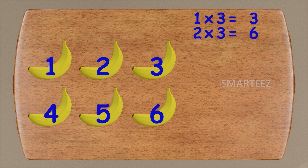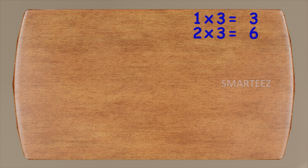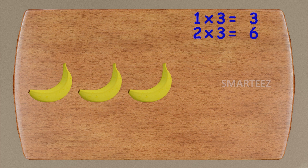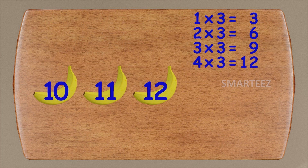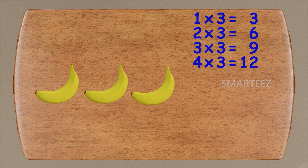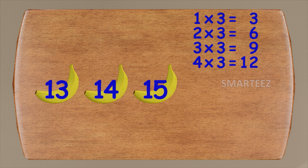We'll add more bananas, three at a time. That's three more bananas. We had six already. This will be seven, eight, and nine. Three times three is nine. Let's add three more. We had nine earlier. This will be ten, eleven, and twelve. Four times three is twelve. Let's add three more. We had twelve earlier. This will be thirteen, fourteen, and fifteen. Five times three is fifteen.